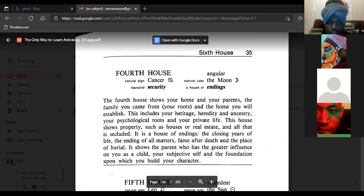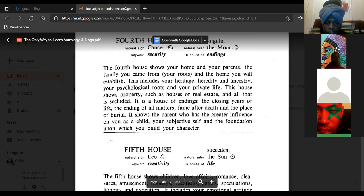Fourth house, natural sign Cancer, keyword security, angular, natural ruler the Moon, house of endings. The fourth house shows your home and your parents, the family you came from, your roots and the home you will establish. This includes your heritage, heredity, and ancestry. It is a house of endings: the closing years of life, the ending of all matters, fame after death, and the place of burial.